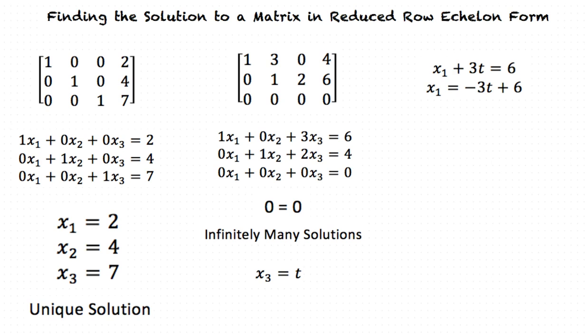Next, we must solve for x2, which will give us x2 plus 2t is equal to 4, which simplifies to x2 is equal to negative 2t plus 4.